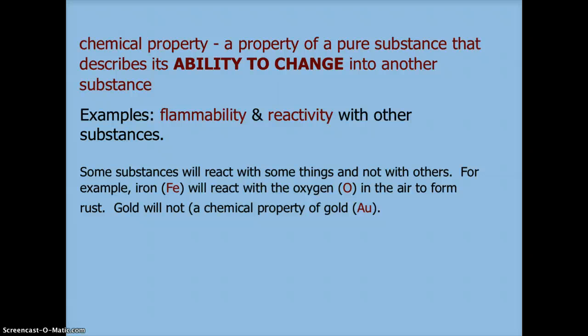For example, iron, which is known by the chemical symbol Fe, will react with oxygen, chemical symbol O, in the air to form rust. Gold will not react with oxygen, which is a property of gold or chemical property of gold.